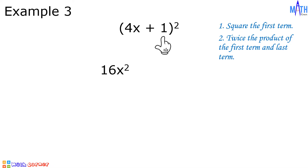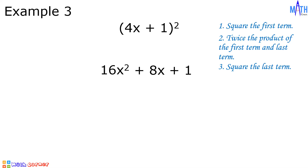Last step: square the last term. 1 times 1 is equal to 1. And the square of 4x plus 1 is equal to 16x squared plus 8x plus 1.